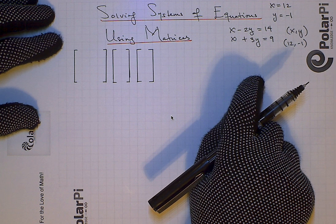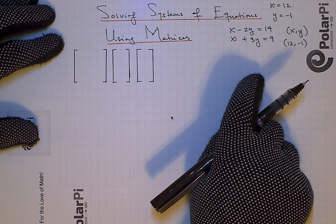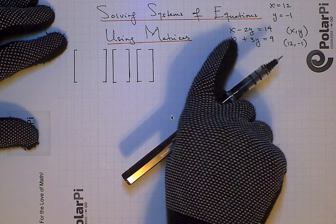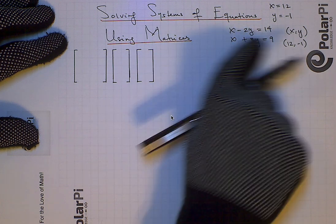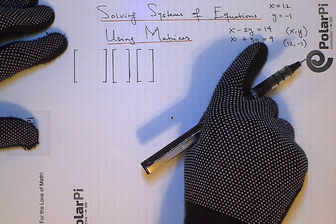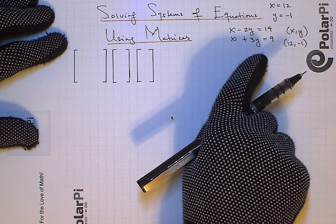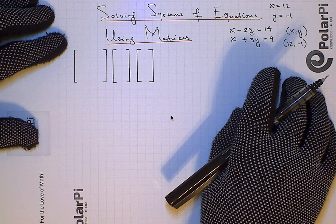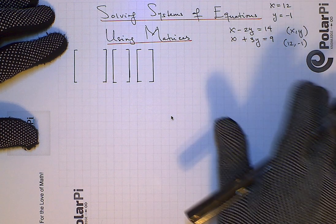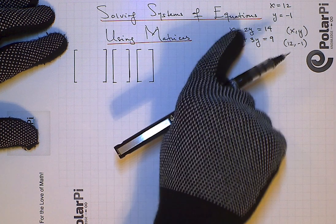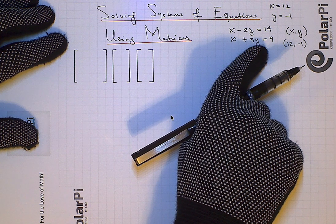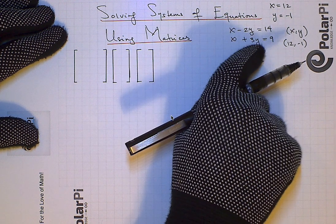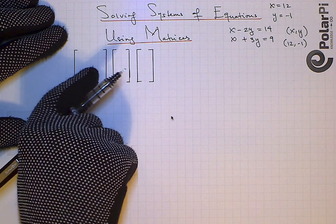It's great to know matrices for a lot of reasons, but one good reason is if you want to know how to solve a system of N equations and N unknowns. In this particular video, I'm just going to focus on a system of two equations and two unknowns, and that system of equations is right here. I'm going to show you how to solve this using matrices, and you can extend the idea I discuss here to solve a system of three equations and three unknowns in a very similar fashion, and four equations and four unknowns, and so on. Since both of these equations represent a line, we know that our solutions of x equals 12 and y equals negative one represent the point at which these two lines intersect. We should know that we can represent this system of equations in matrix form as follows.